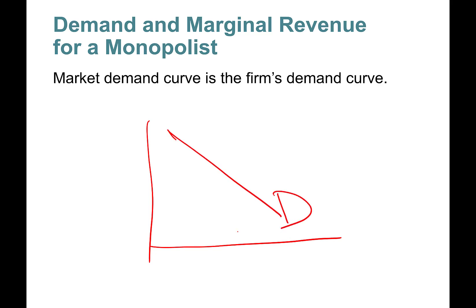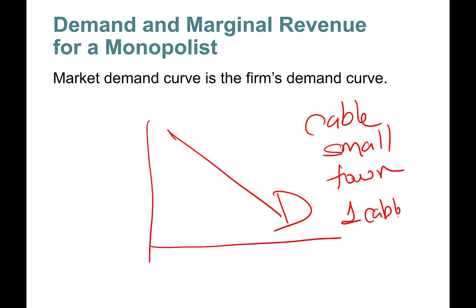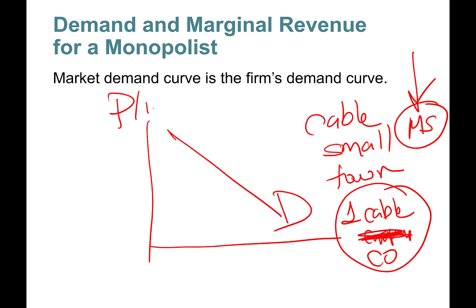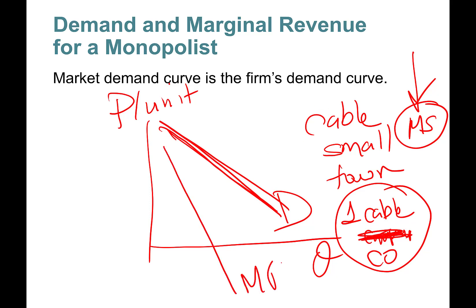Consider demand for cable services in a small town. Imagine just one cable company — I mentioned this before, I lived in Mississippi in a university town where there was only one cable company. So the market demand curve, price per unit subscription versus quantity, will be owned entirely by the monopolist. You also need marginal revenue.